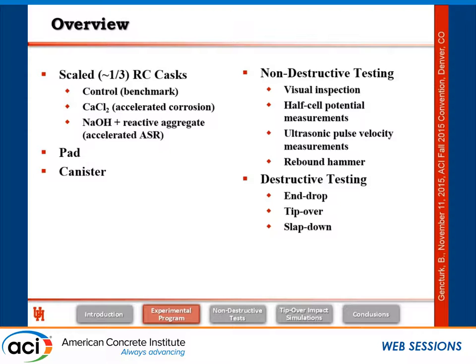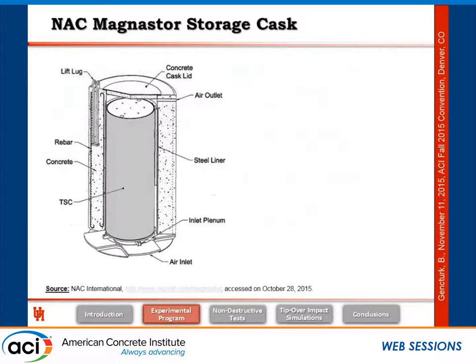We are almost ready to do the destructive testing — waiting for some equipment to be delivered. We will do three types of destructive testing: an end drop, a tip-over, and a slap-down test. Looking at the MAGNASTOR design to understand the different components of these concrete dry cast structures: inside the cylindrical structure is the canister holding spent nuclear fuel, there is a steel liner connected to the concrete walls for shielding, a base plate and lid, and the lid is a steel-concrete composite. There are air inlets at the bottom and outlets at the top for natural circulation to cool the spent nuclear fuel.